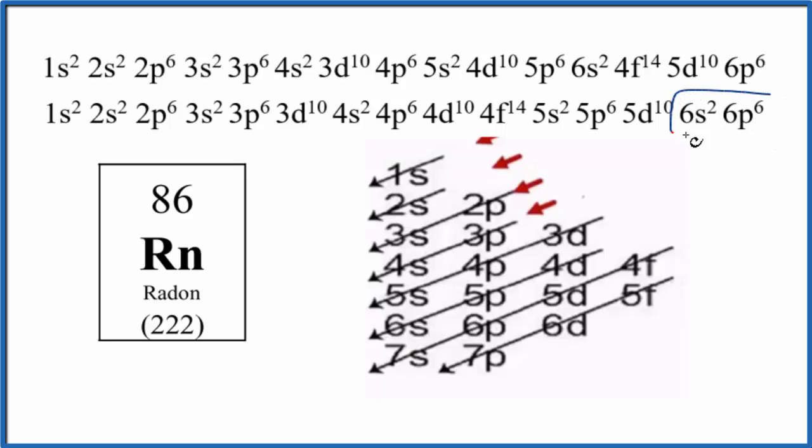So these would be the valence electrons here. We could look for the 6 and see the same thing as well. Either one of these electron configurations is acceptable.